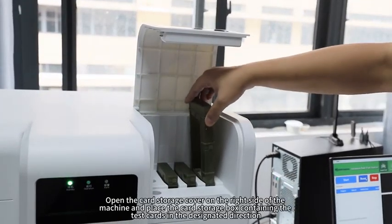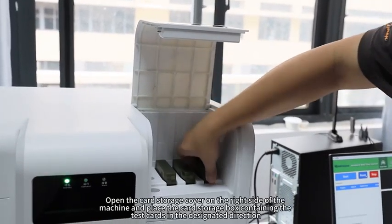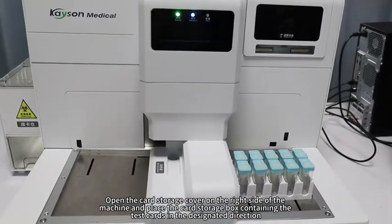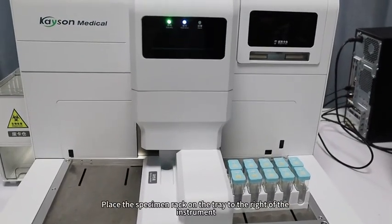Sample Loading: Open the card storage cover on the right side of the machine and place the card storage box containing the test cards in the designated direction. Place the specimen rack on the tray to the right of the instrument.